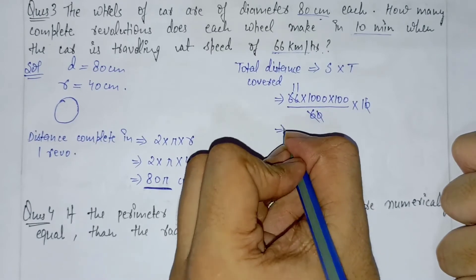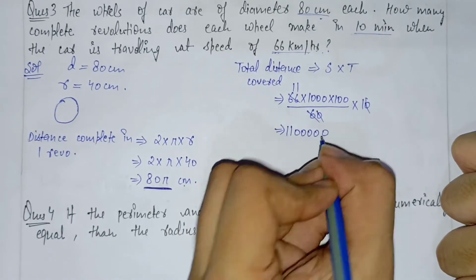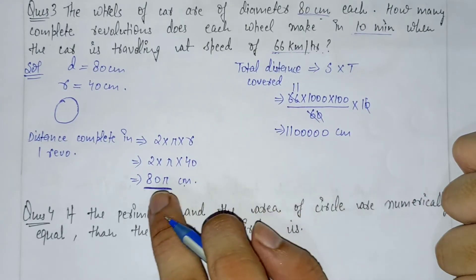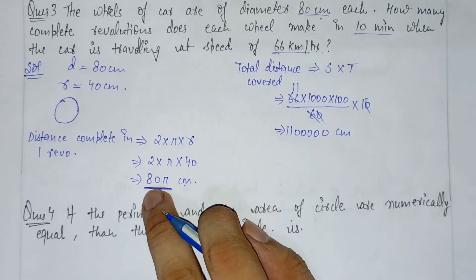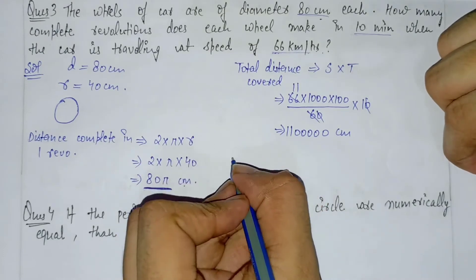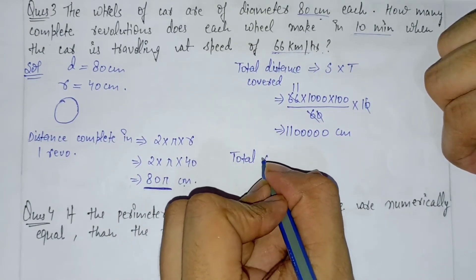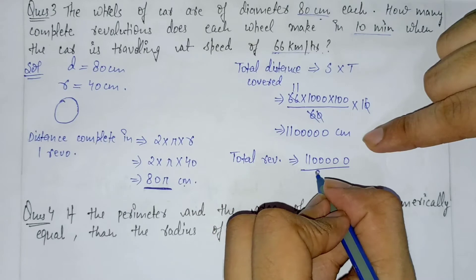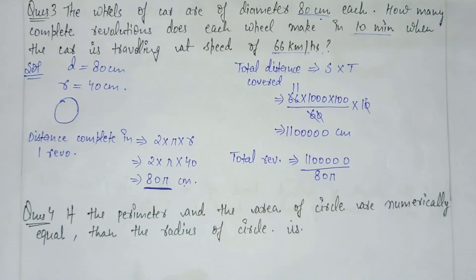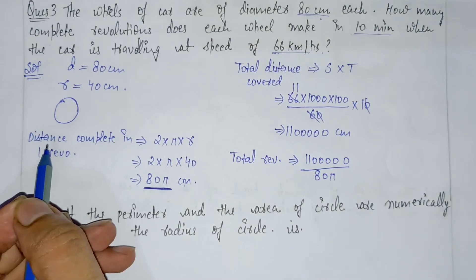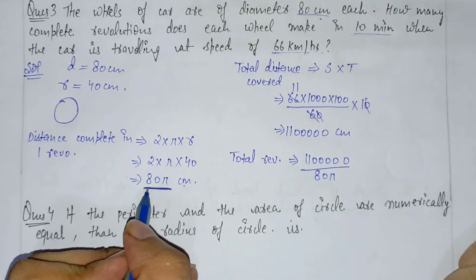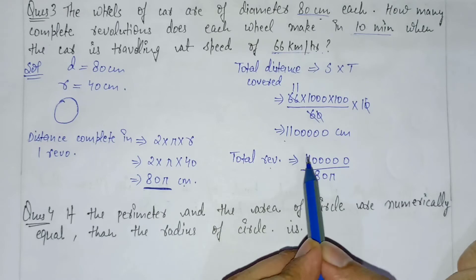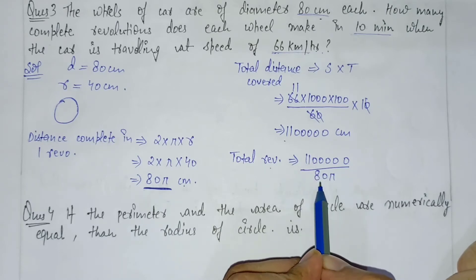The speed is 66 km/h. The total number of revolutions equals the total distance divided by the distance covered in one revolution. First we find how much total distance is covered, then divide by the circumference (one revolution distance) to get the total number of revolutions.